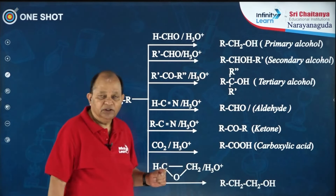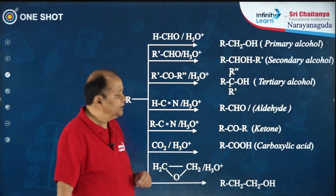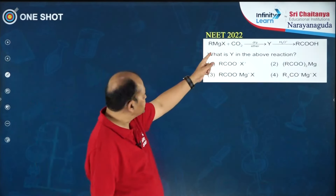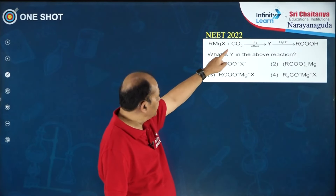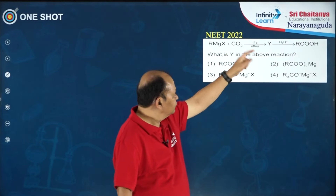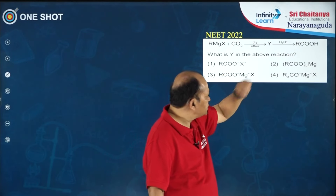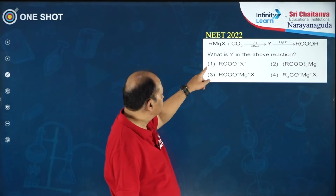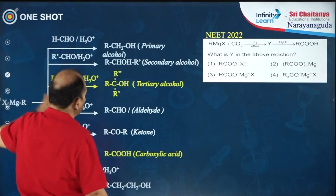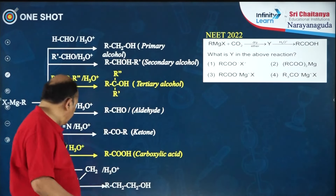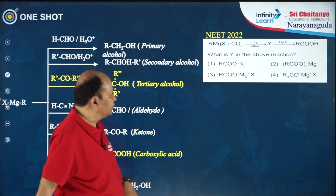Now I am going to show you some of the questions that were asked in the previous NEET examinations. This question was asked in NEET 2022: Grignard reagent reacting with carbon dioxide in dry ether forming an intermediate compound, which on hydrolysis is giving carboxylic acid. So what is the intermediate in that reaction? This is based on what we have seen — Grignard reagent reacting with carbon dioxide to give carboxylic acid.